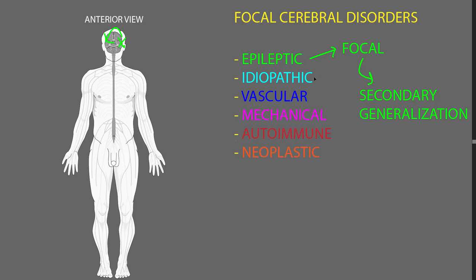There are many idiopathic disorders — idiopathic just meaning we don't know what causes them in the majority of cases — that can cause a slow degeneration or loss of cells in focal areas of the brain. A common example of this is Parkinson's disease, where there's a very specific area in the brain stem with slow loss of neurons — a degeneration that causes dysfunction in other areas of the brain and the abnormal movements and other features we see with Parkinson's disease.